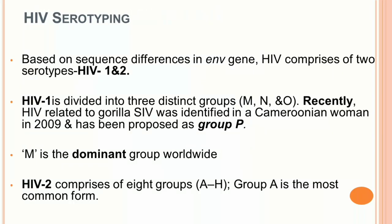There are two different types of HIV virus: HIV-1 and HIV-2. The differentiation is based on the sequence of the ENV gene. HIV-1 is divided into three groups — M, N, and O — while HIV-2 is divided into eight groups labeled A to H. In HIV-1, group M is the dominant group worldwide.